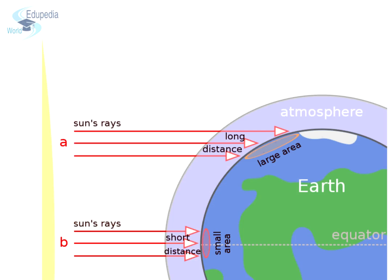Similar variation of sun rays is experienced on earth's surface. The sun rays are more or less direct on areas around the equator throughout the year. Due to this, there is more heat received by these places throughout the year. When we start moving towards the poles, the sun rays begin to spread over a larger area and thus get less intense. The heat received by places keeps on decreasing as we move away from the equator.